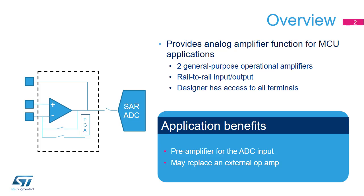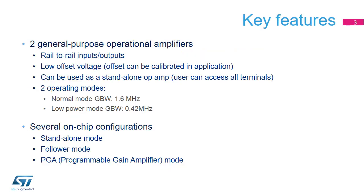They can also act as a pre-amplifier for the ADC input. The operational amplifier inside STM32L5 products offers general-purpose rail-to-rail inputs and outputs. The input-offset voltage can be calibrated in the application to achieve minimal offset. All the terminals are accessible by the user, so that any operational amplifier function can be configured with external passive components.